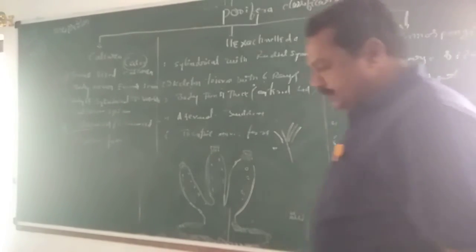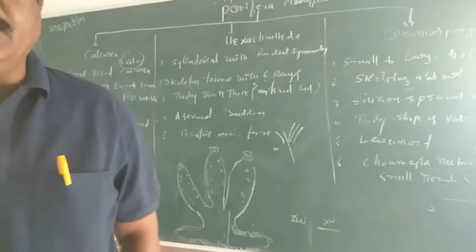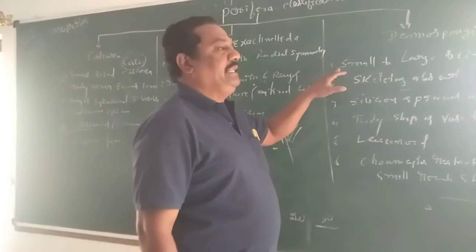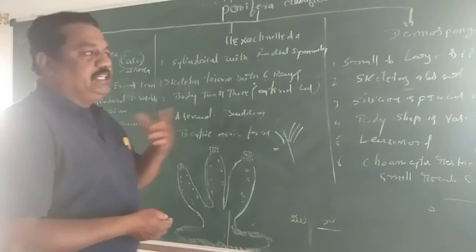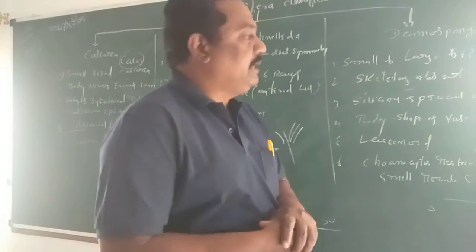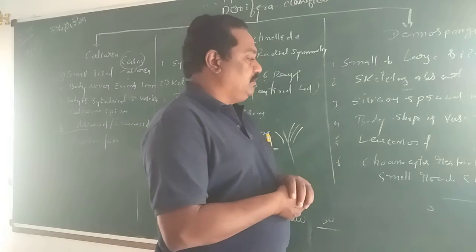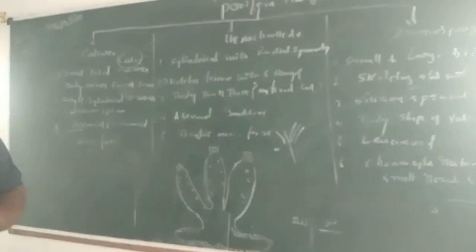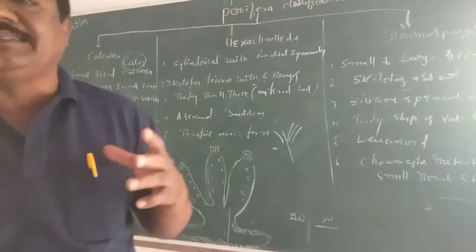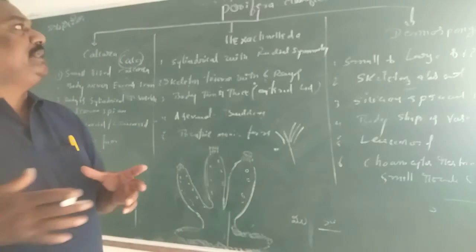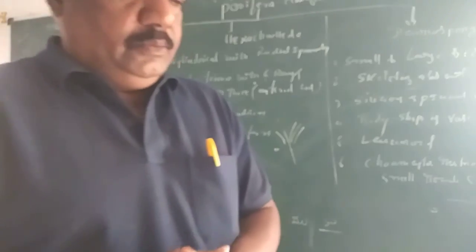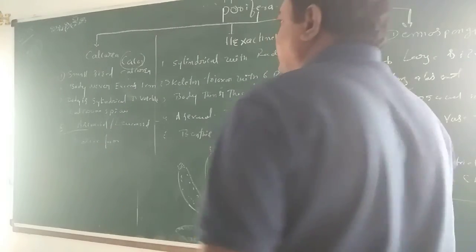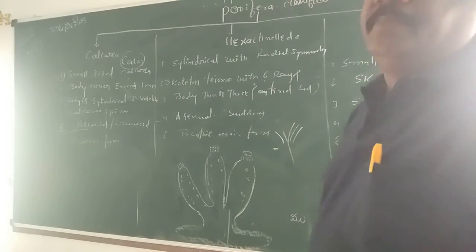In Demospongiae, the endoskeleton system is made by spongin fibers or siliceous silicon spicules. These are generally small in size. The body shape is vase-shaped, and a leucon type of canal system is present. If choanocytes are present, they are restricted only in round, chamber-like structures. So Porifera is basically classified into three categories on the basis of spicule nature: Calcarea, Hexactinellida, and Demospongiae. Tomorrow we will discuss the type study animal of Porifera. Thank you.